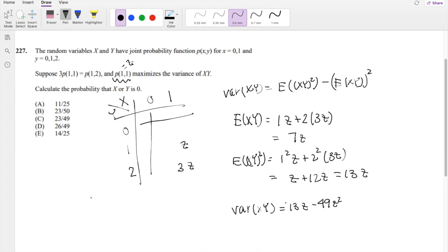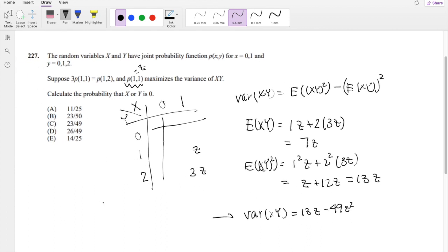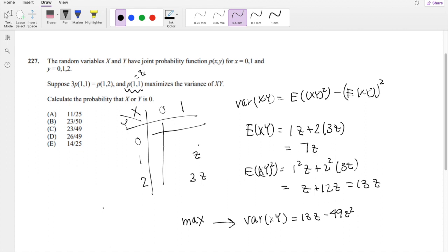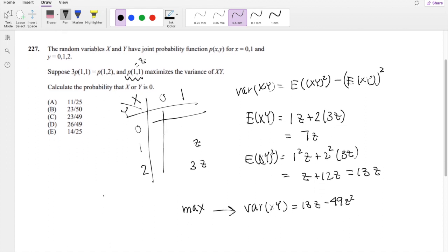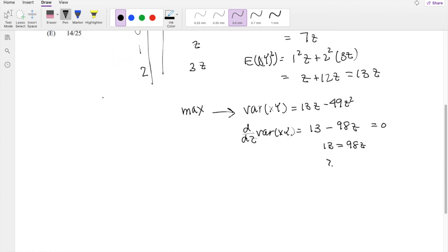Right, and we're trying to maximize it. So as always, back in those calc 2 days, in order to maximize anything, we just have to take the derivative. When we take the derivative, in terms of z of variance, we get that this is equal to 13 minus 98z. And we set that equal to 0, so we get 13 equals 98z.